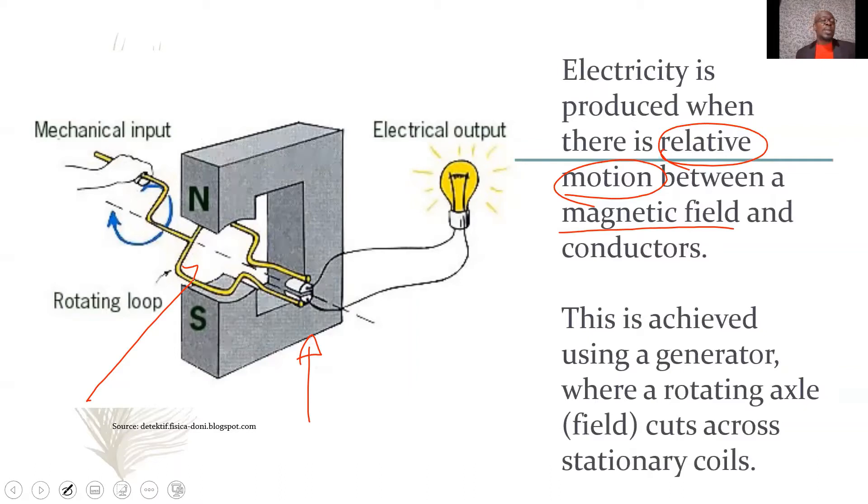Now, in our diagram, we're showing here that this motion is being produced by hand. However, in a regular generator, that is where the main difference exists for the various systems. So, let us take a general view of what a generation system looks like.